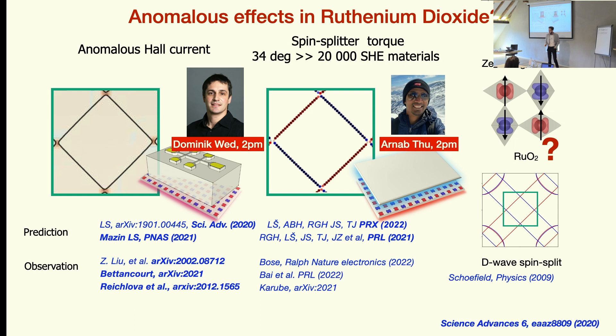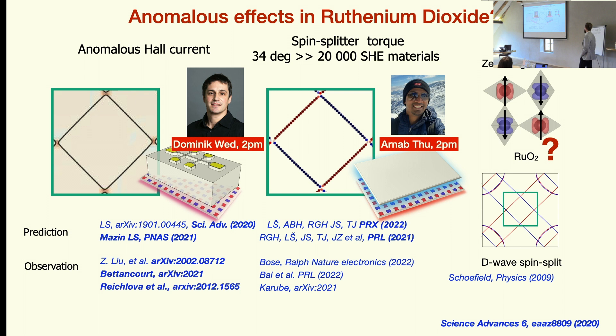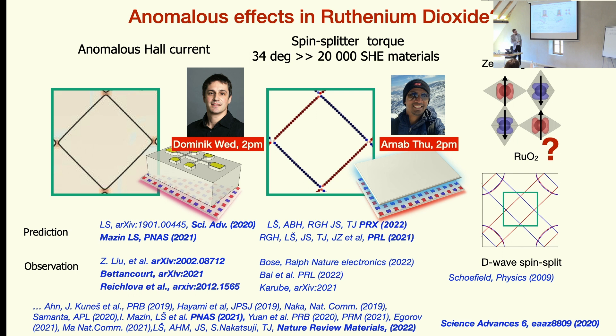About these experimental discoveries I believe we will have two talks — one from Dominic on the related altermagnet and anomalous Hall effect, and a talk tomorrow from Arnab on the discovery of spin-splitter physics in ruthenium dioxide. This type of physics has also been reported in many other materials, and there are some references including recent reviews on these topics.